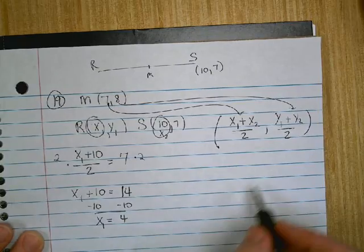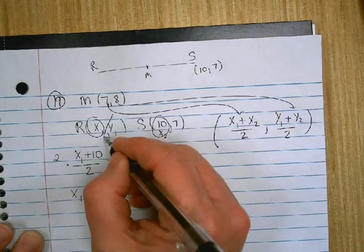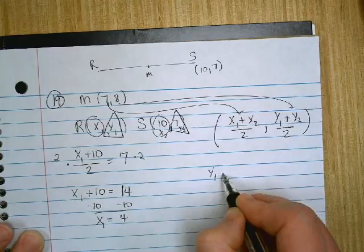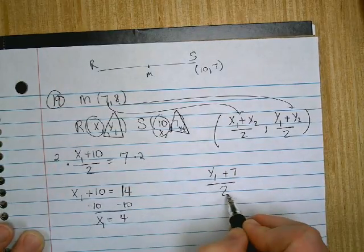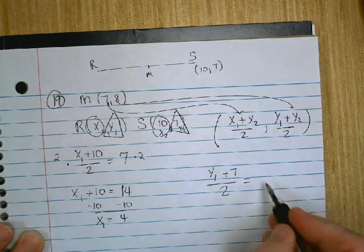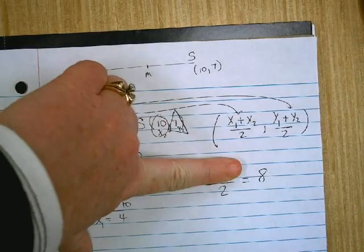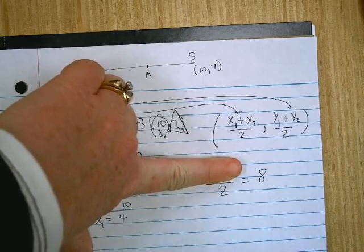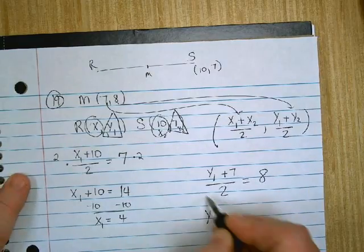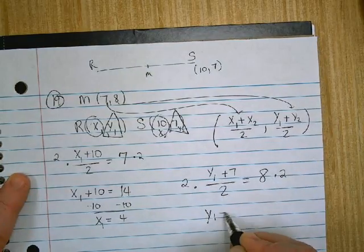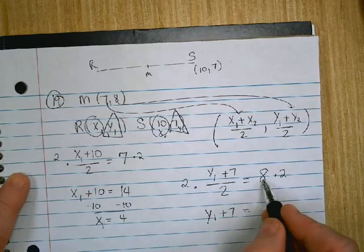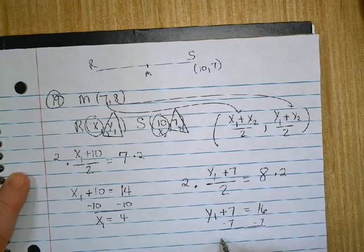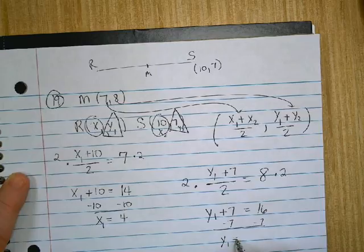We're going to do the same thing for y. y sub 1 and y sub 2. If you add them together and divide by 2, you're going to get 8. Now y'all tell me something. What number divided by 2 is 8? 16. Now we're going to solve it algebraically, but you've got enough common sense to know that something divided by 2 that equals 8 is really 16.